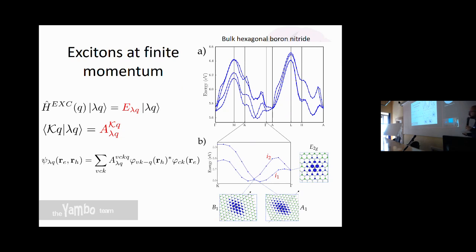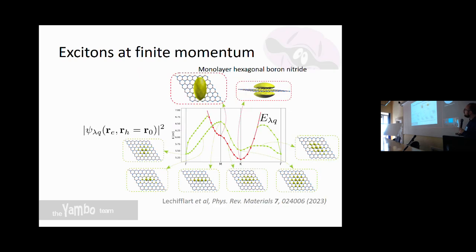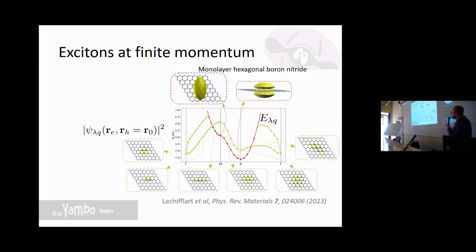In the tutorial this afternoon you will be able to compute such a wave function. Finite-q calculations are not included in the tutorial but are available in the Yambo code — you just change a variable in the input. Another example is monolayer boron nitride, where you can analyze the exciton dispersion and the real-space wave functions for various q-points and for different exciton branches.